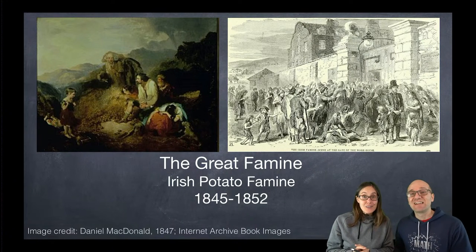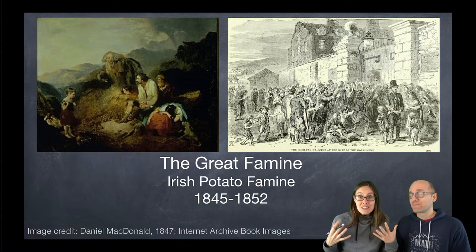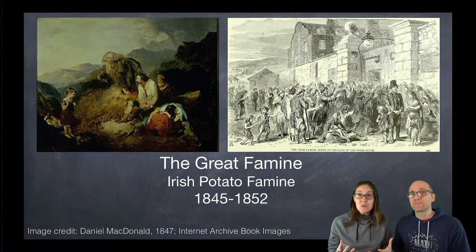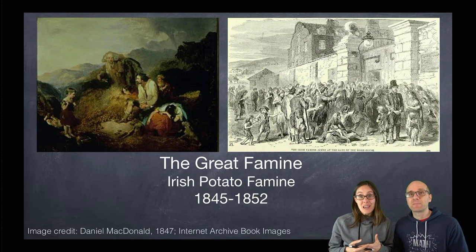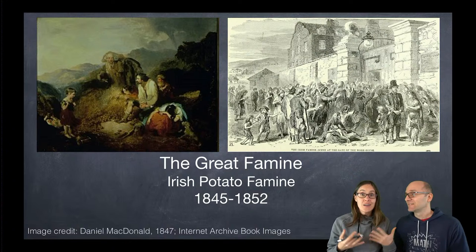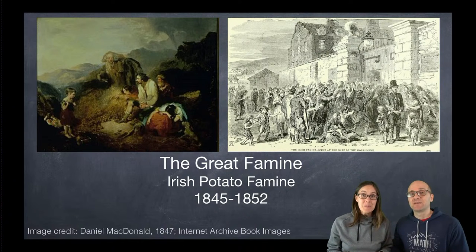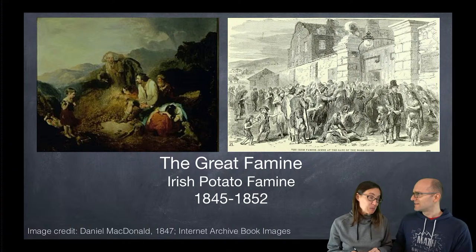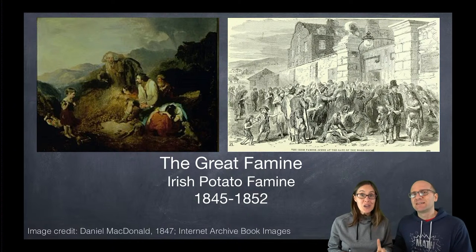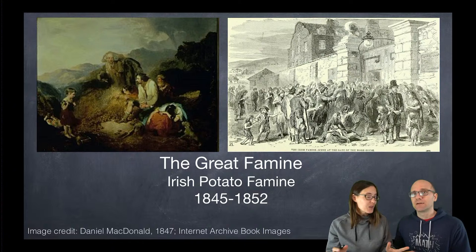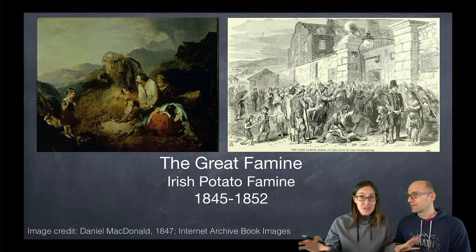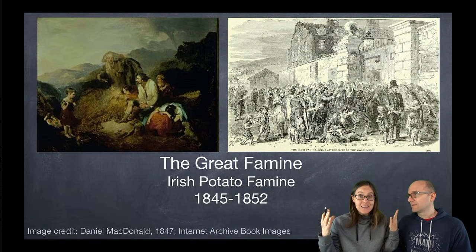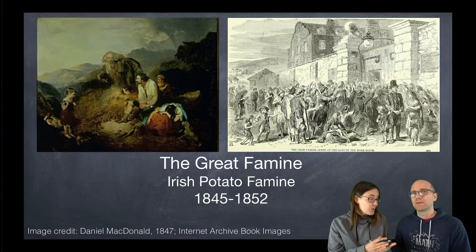This was a big problem in Ireland in the 1800s because the diet of most people was almost entirely potatoes. When all of the potatoes got sick at once, it caused an enormous famine — the potato blight. So far we know that plants can be propagated by cloning: you can cut up certain plants, put the pieces in the ground, and you'll get new plants that are clones of the original plant.